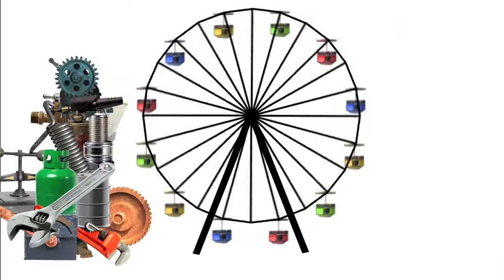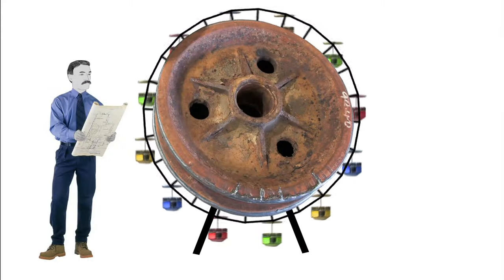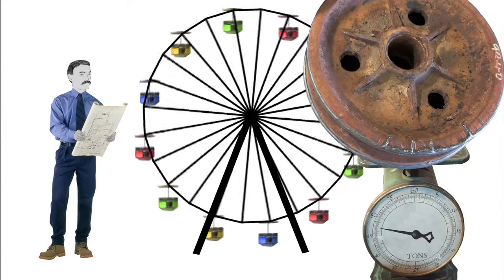Second, it used much more steel. At the time, the axle was the largest piece of steel ever made in the United States. It weighed 46 and a half tons.